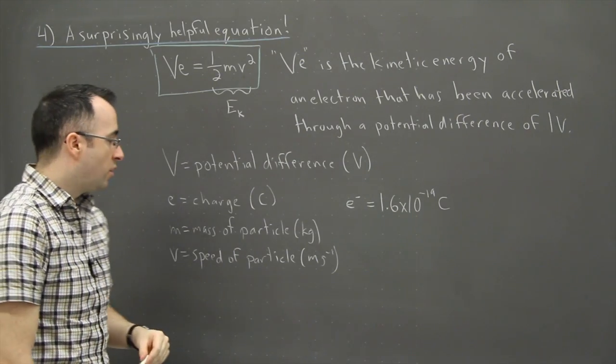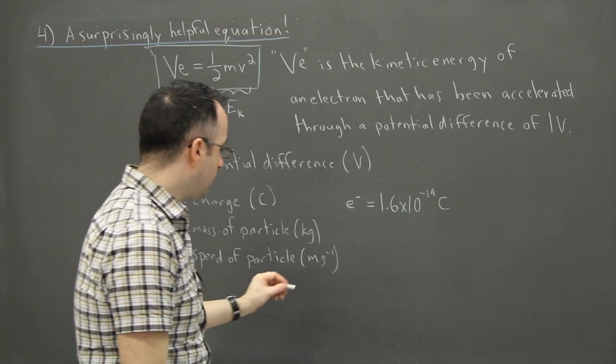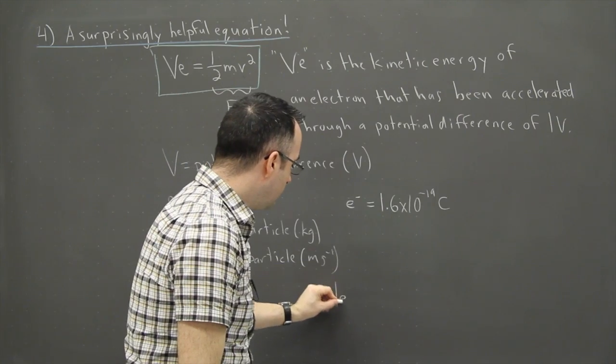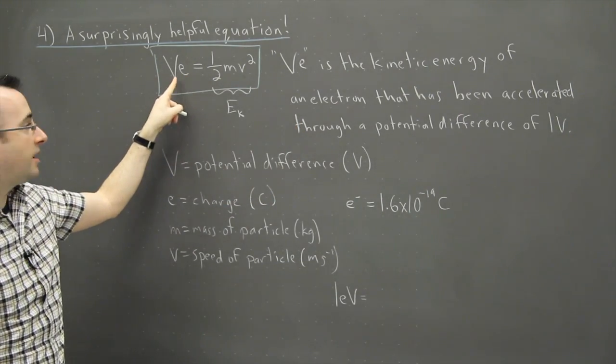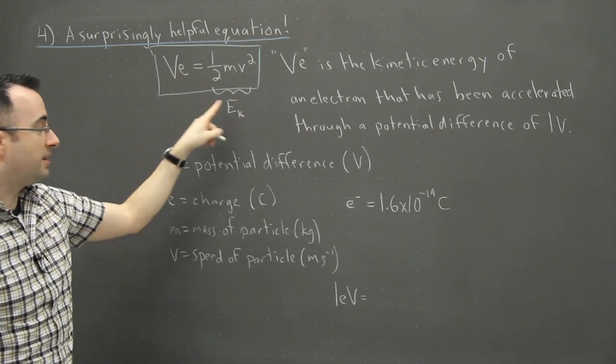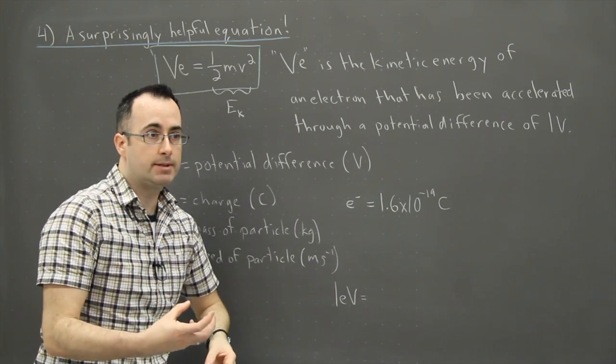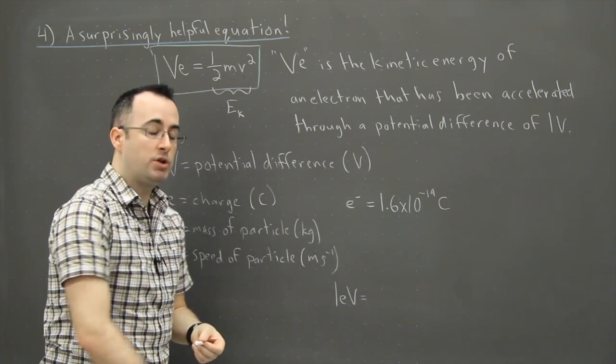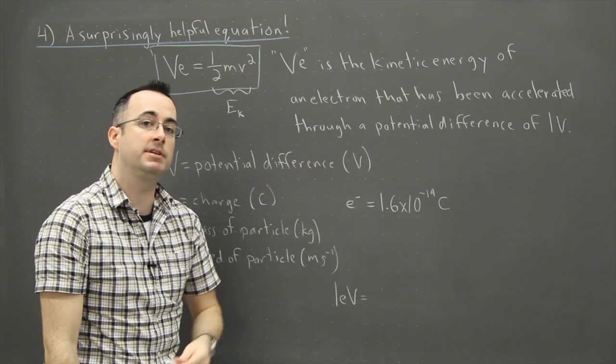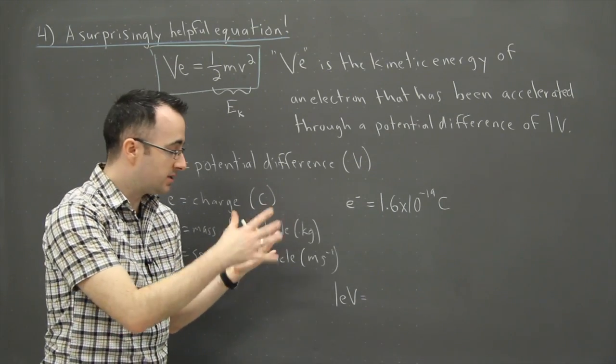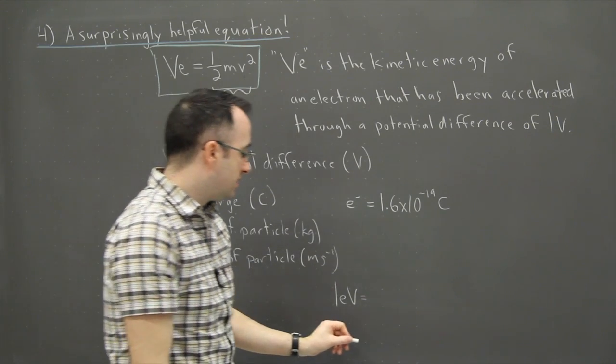What I want to show you then is what 1 eV is, because this is going to be useful actually in nuclear physics. So 1 eV then. See, E times V is a unit of energy. That's why in particle physics, it turns out, and in nuclear physics, we measure energies in electron volts. We don't use joules. Electron volts are actually much more handy. They're actually much more useful to physicists who are actually working with these quantities.